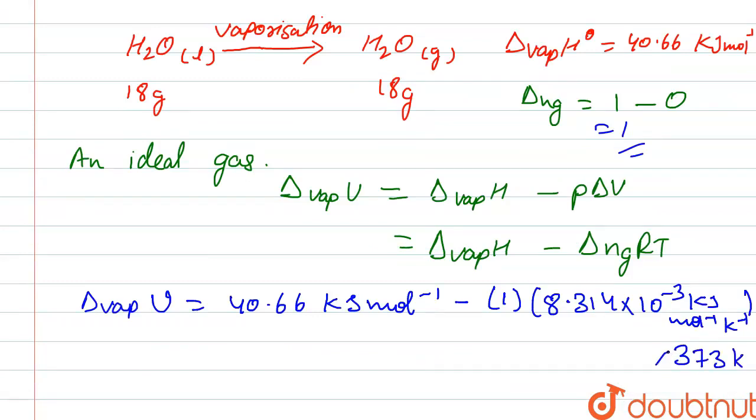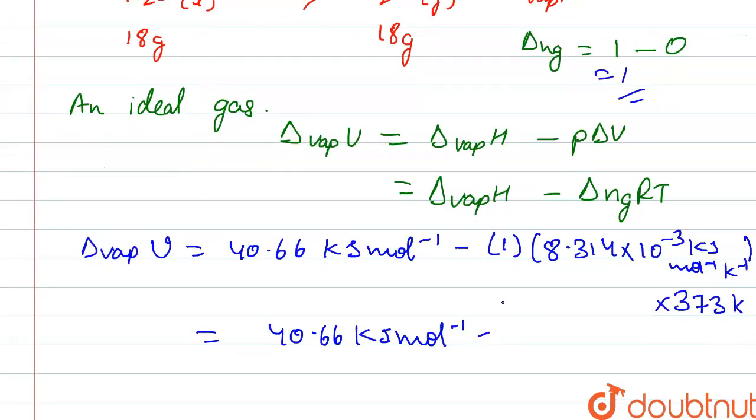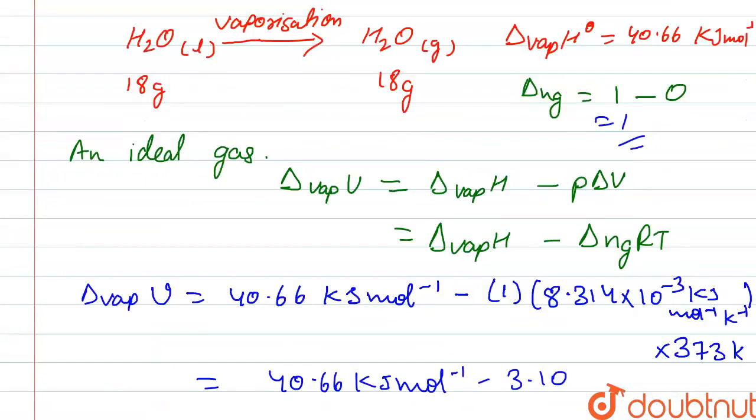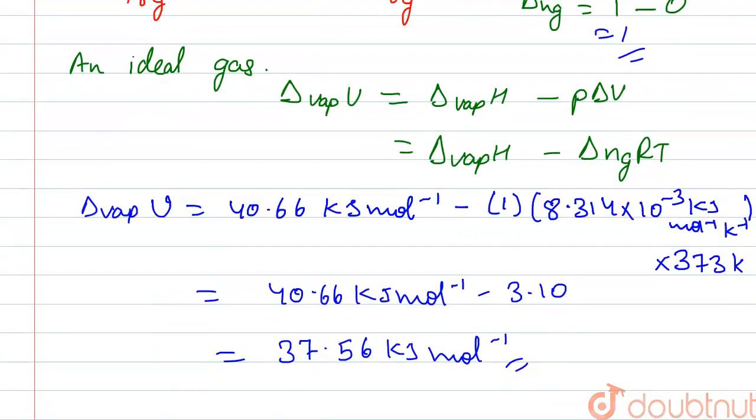373 kelvin. So here it is 40.66 kilojoule mole inverse minus 3.10. This gives us 37.56 kilojoule mole inverse. So this is the value of internal energy of vaporization. Thank you.